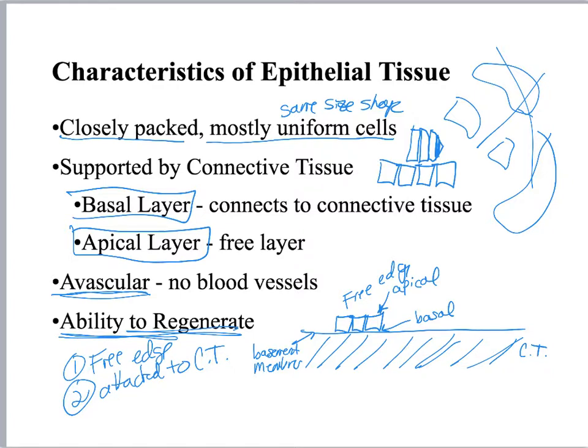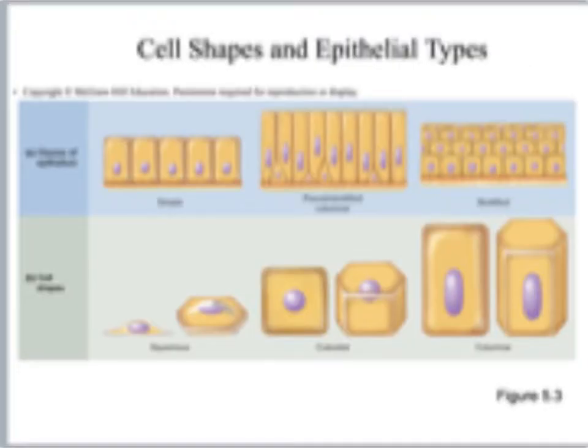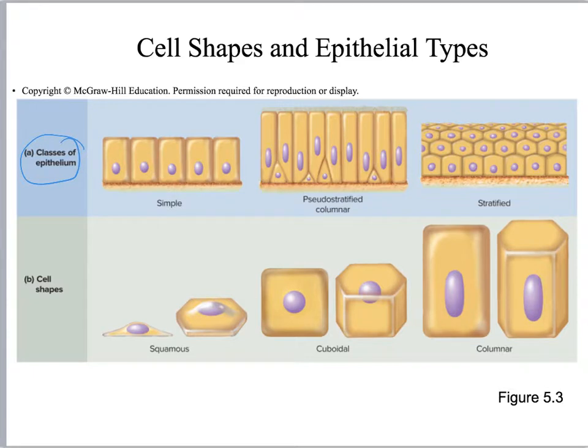Let's look at the classes: I have simple versus stratified. Simple means one layer, stratified means two plus layers. So I can see I've got one, two, three, four, and then I can see a hint of a fifth layer here. Here I can only see one layer.